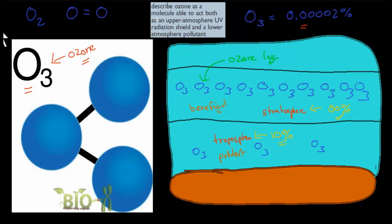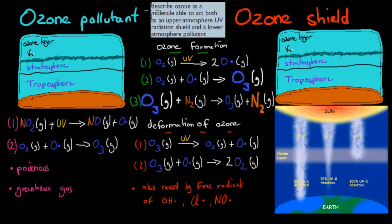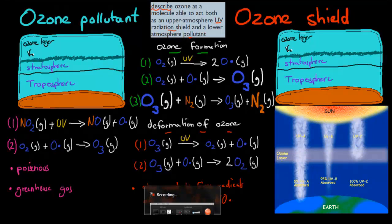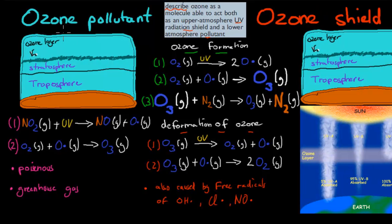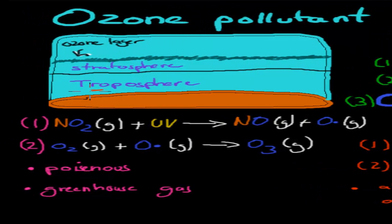The dot point says describe ozone as a molecule able to act both as an upper atmosphere UV radiation shield and a lower atmosphere pollutant. So we have to cover both areas: it helps us in the upper atmosphere but causes problems in the lower atmosphere. In the troposphere, it acts as a pollutant.